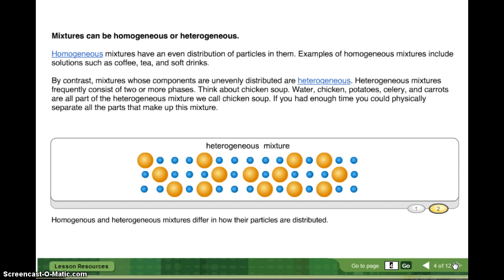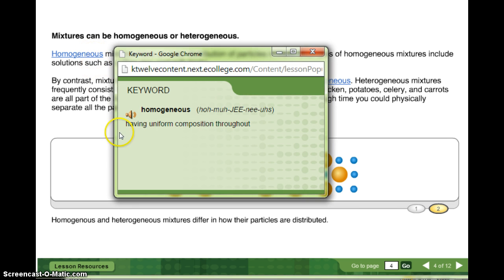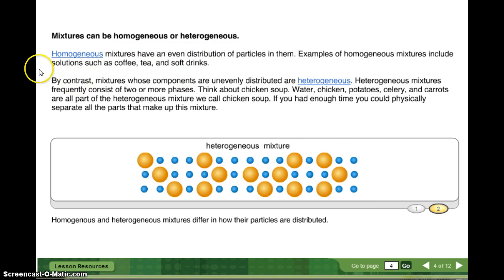Mixtures can be homogenous or heterogeneous. So let's look at these words. We have the prefix homo and hetero. Homo means the same. Hetero means different. So let's look at homogenous or homogenous mixtures first. Having uniform composition throughout. All right, so homogenous mixtures have an even distribution of particles in them. Examples of homogenous mixtures include solutions such as coffee, tea, and soft drink.